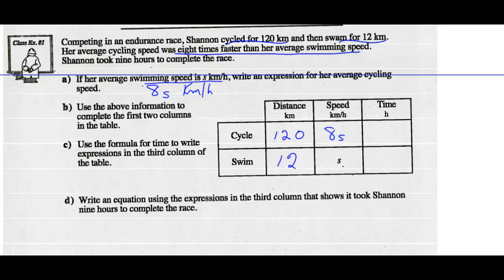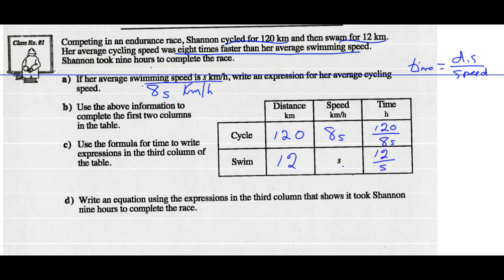Remember, time equals distance over speed. So the time she cycled is a distance of 120 over a speed of 8S. The distance she swam divided by the speed she swam gives the time, which is 12 over S.